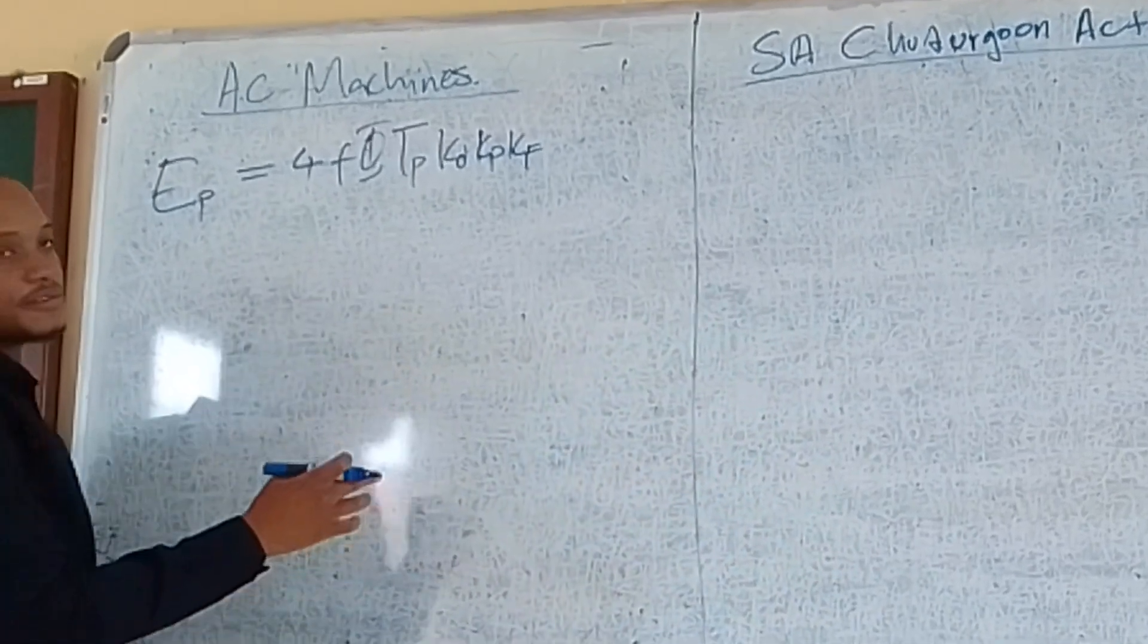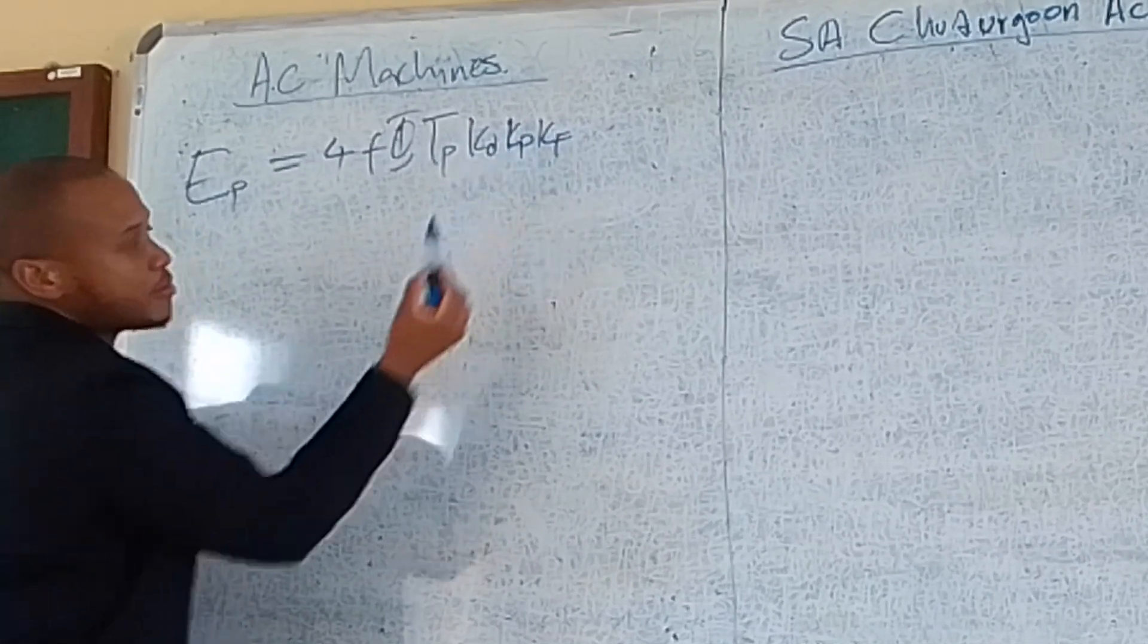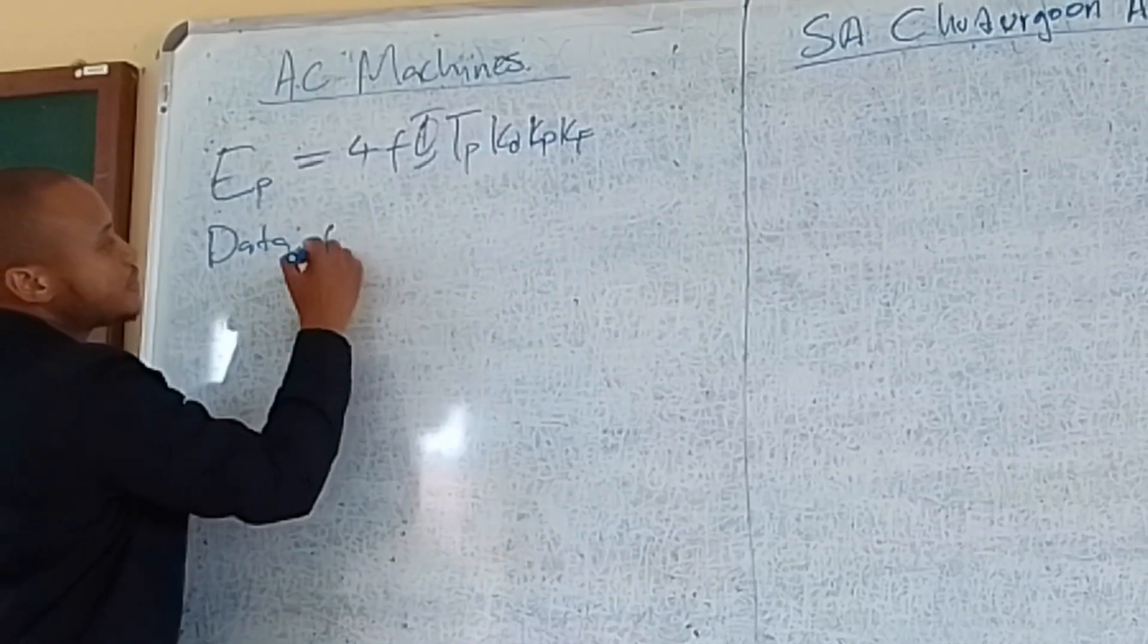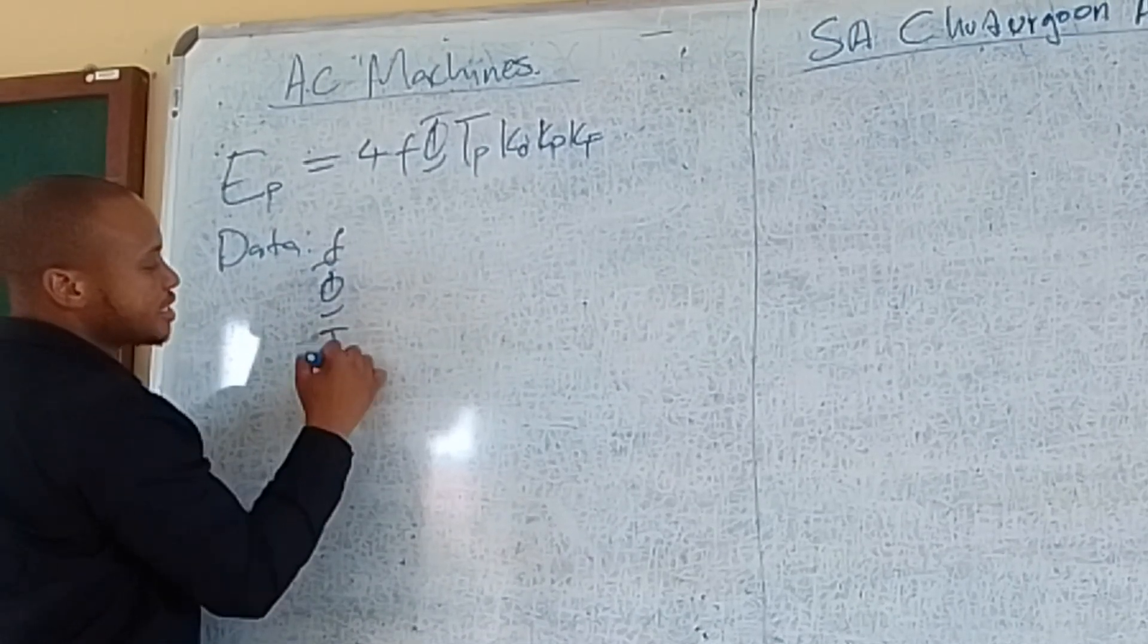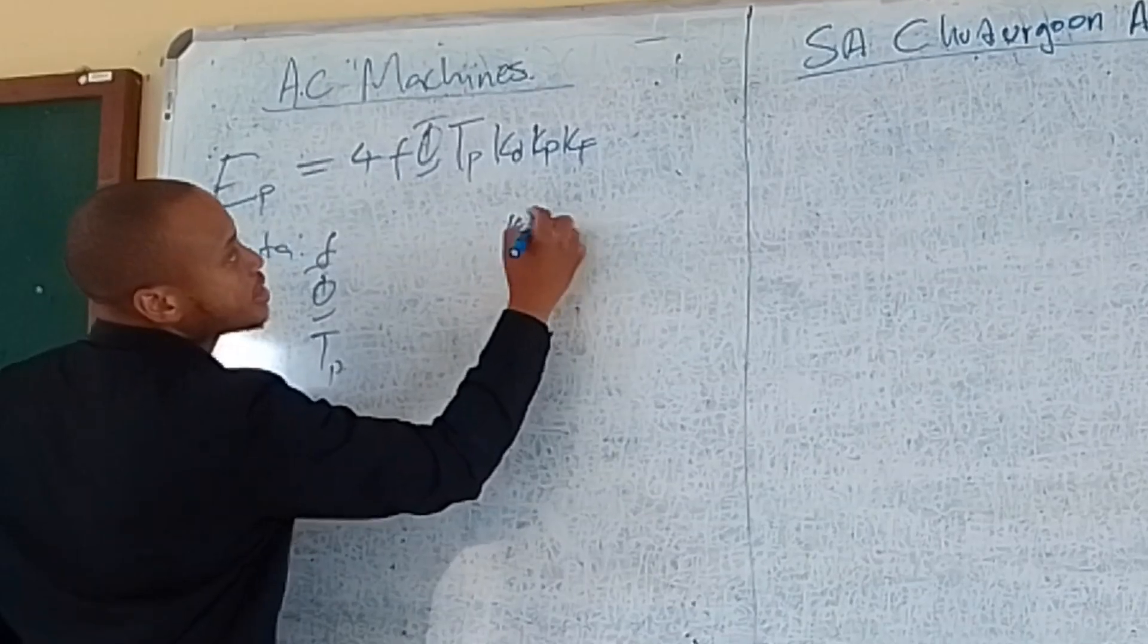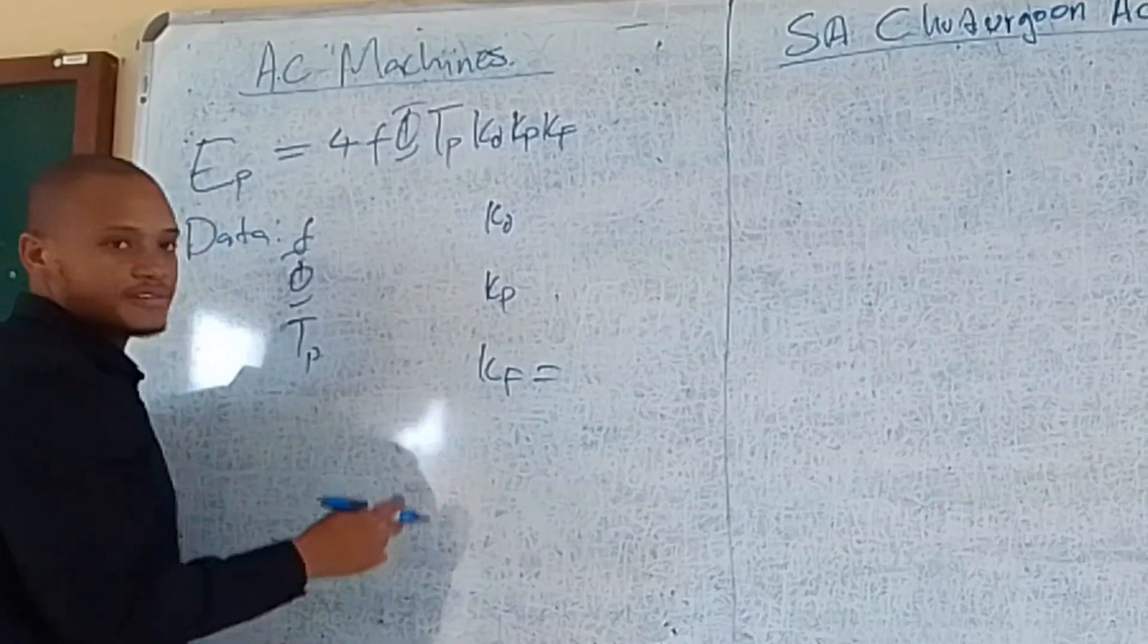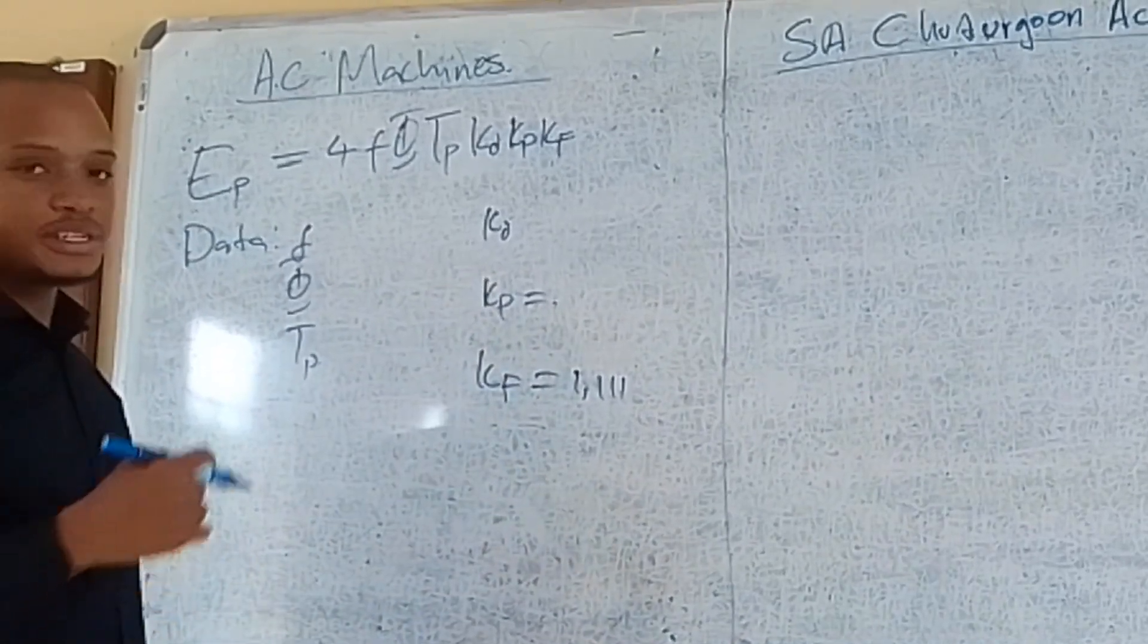We have done another video where we explain the distribution factor, pitch factor, and form factor. Looking at this equation, the data I will need: the frequency, the flux, the turns per phase, my Kd which is the distribution factor, my Kp which is the pitch factor, and my Kf. Kf is the constant 1.11.